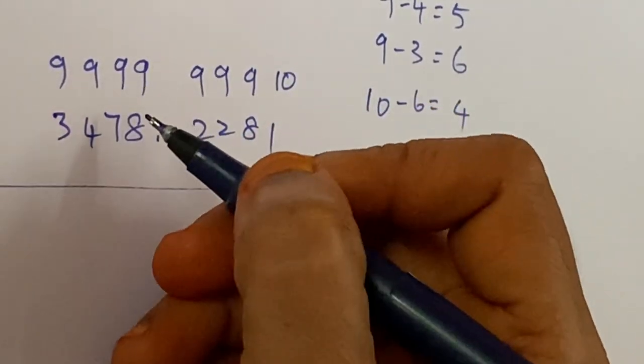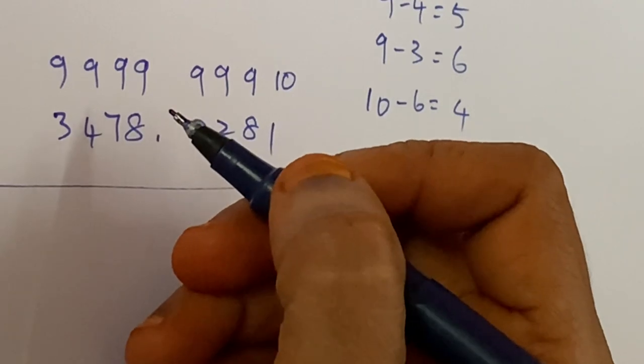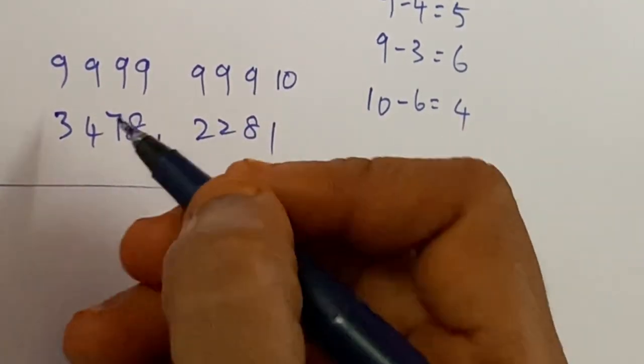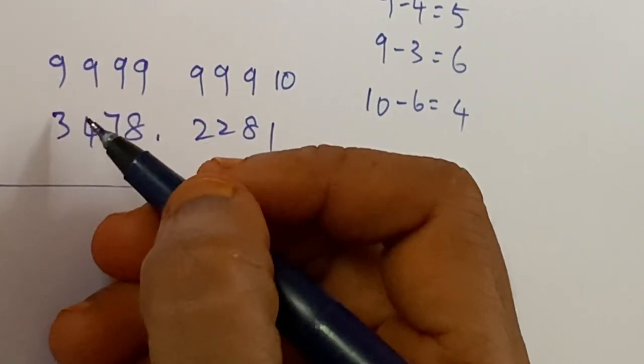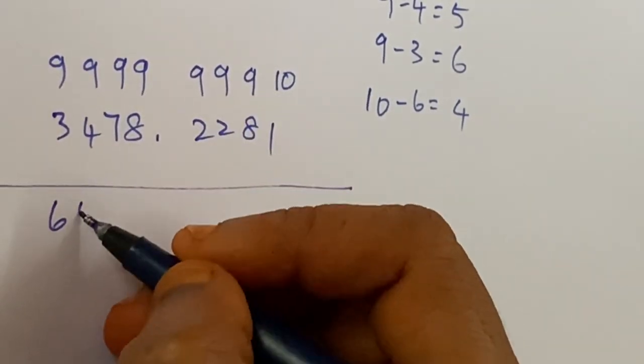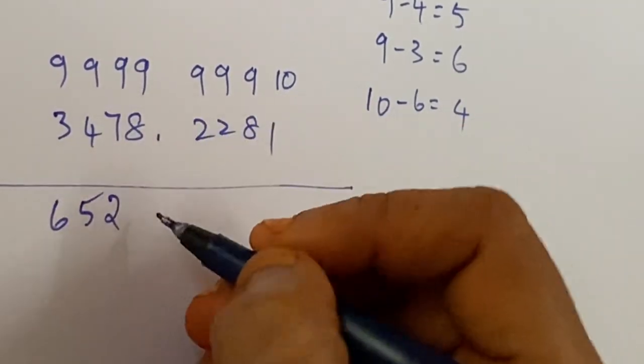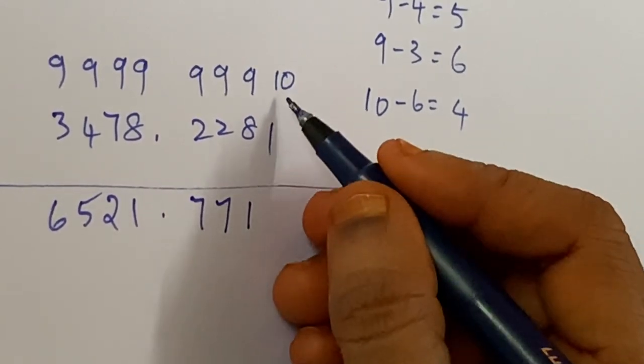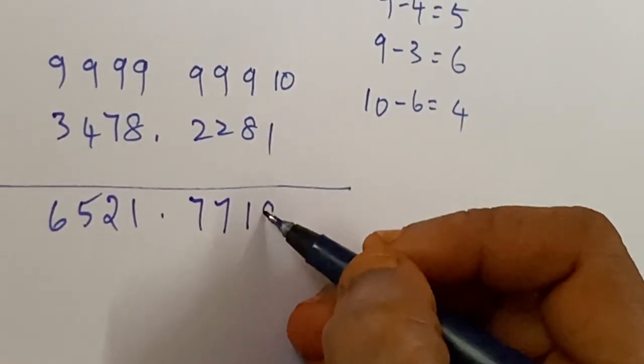This is known as mental math. You can subtract mentally. 9 minus 3 is 6, 9 minus 4 is 5, 9 minus 7 is 2, 9 minus 8 is 1, 9 minus 2 is 7. Last digit, so 10 minus 1 is 9. So this is the answer.